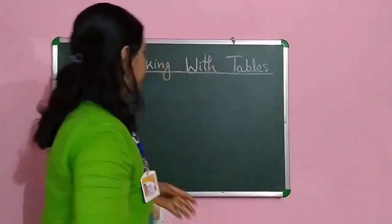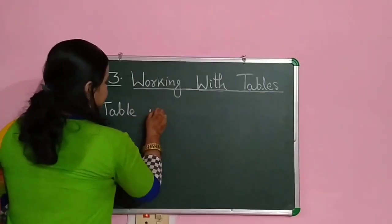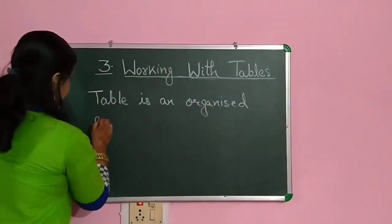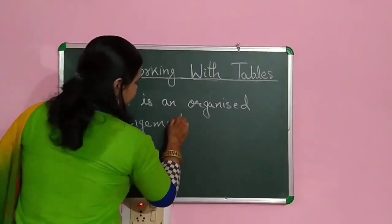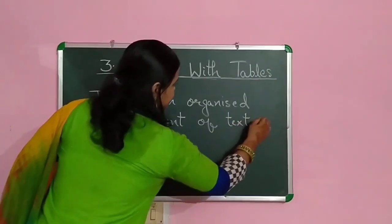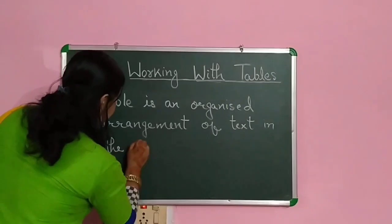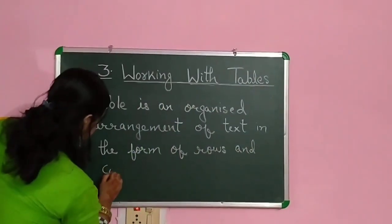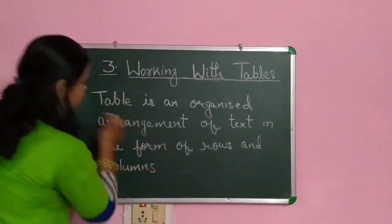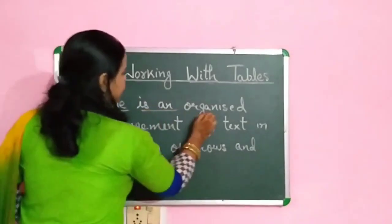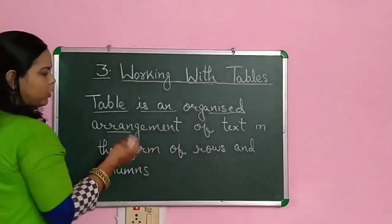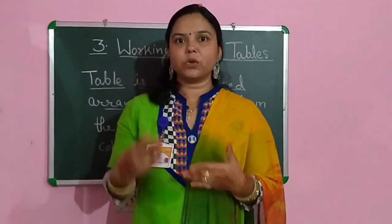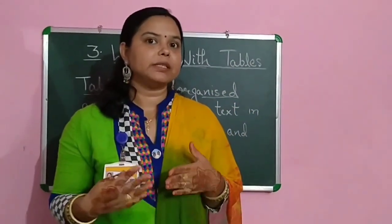What is a table? Table is an organized arrangement of text in the form of rows and columns. Horizontal lines are called rows and vertical lines are called columns. Table is made up of rows and columns, and the intersection of a row and a column is known as a cell.